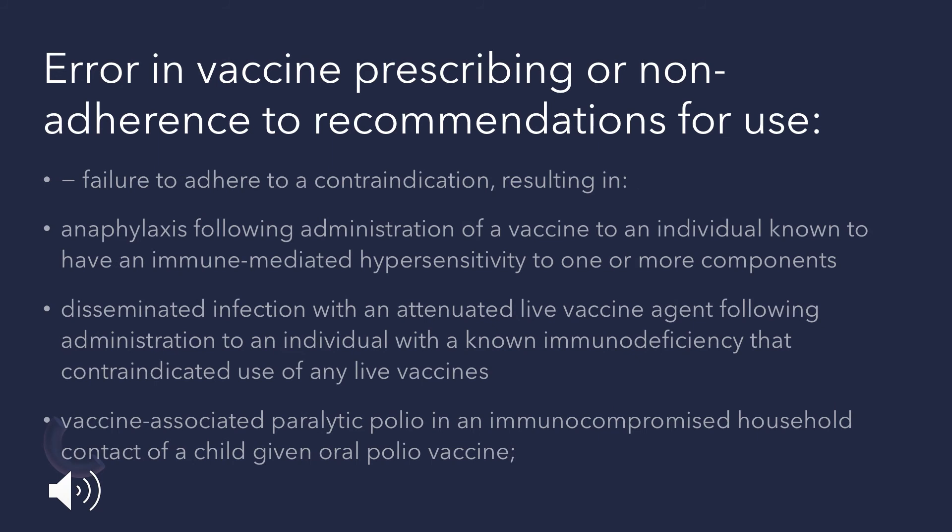Error in vaccine prescribing or non-adherence to recommendations: if a vaccine is contraindicated in a certain condition and that contraindication is not followed, it may result in various adverse events such as anaphylaxis or hypersensitivity reactions. Disseminated infection with a live attenuated vaccine can occur if the virus is not properly inactivated and the vaccine is given to an immunodeficient patient. Vaccine-associated paralytic polio may develop in immunocompromised patients given the oral polio vaccine.